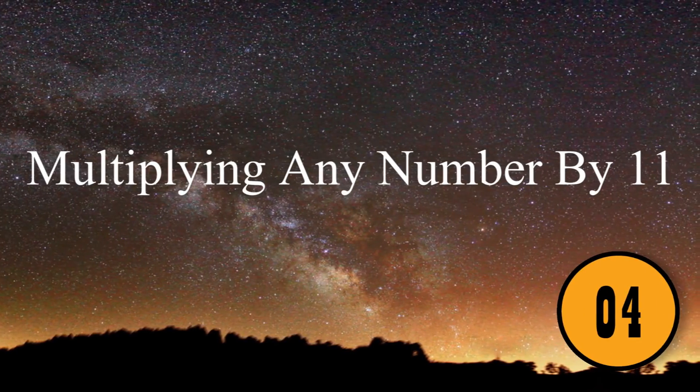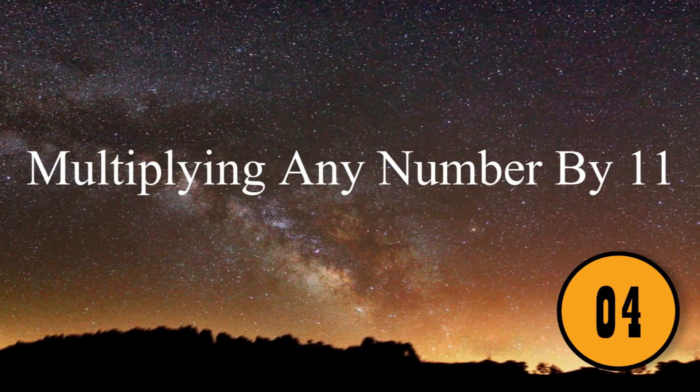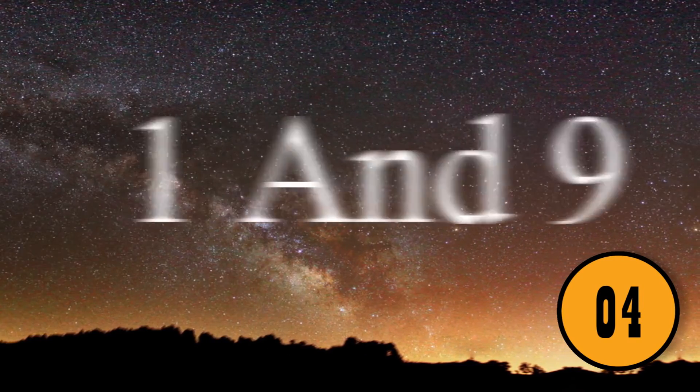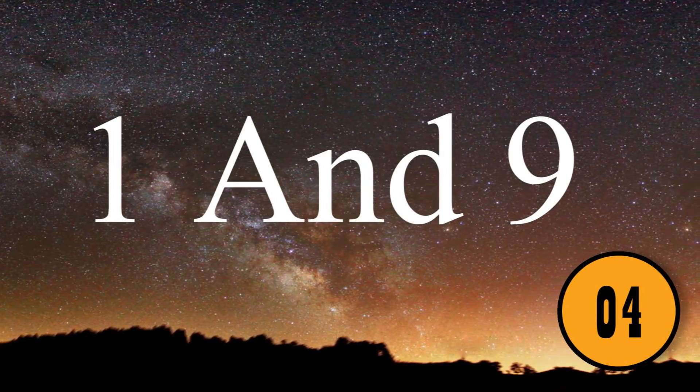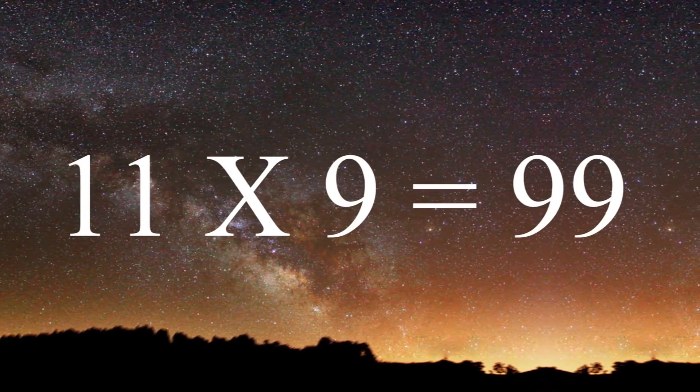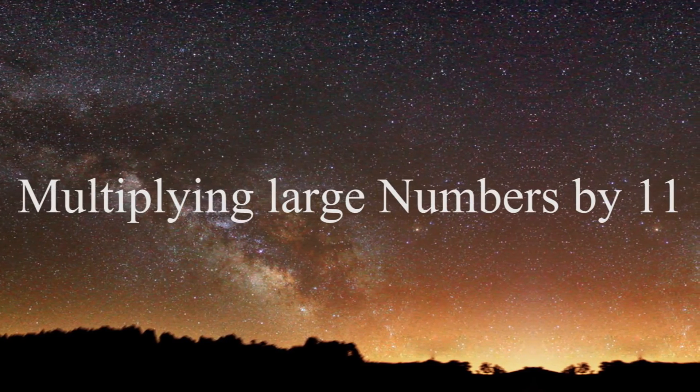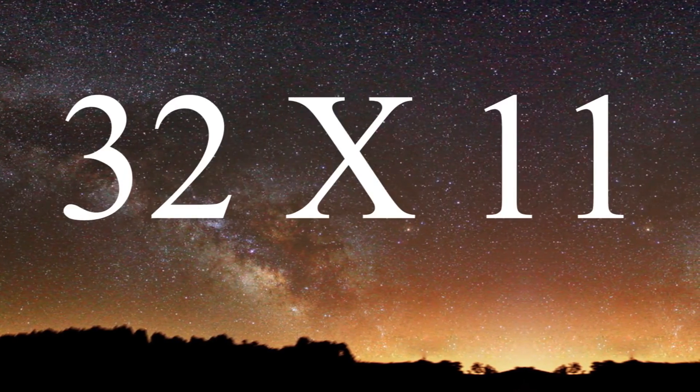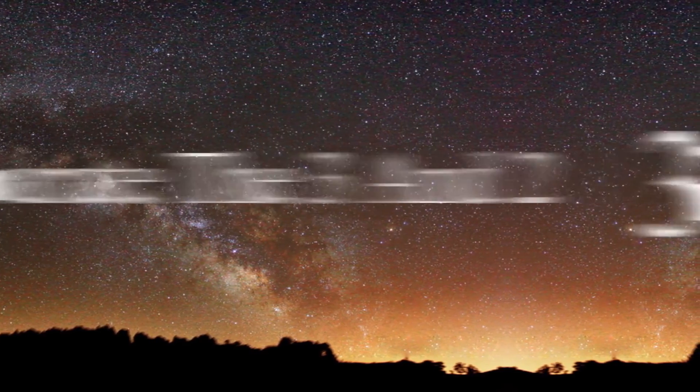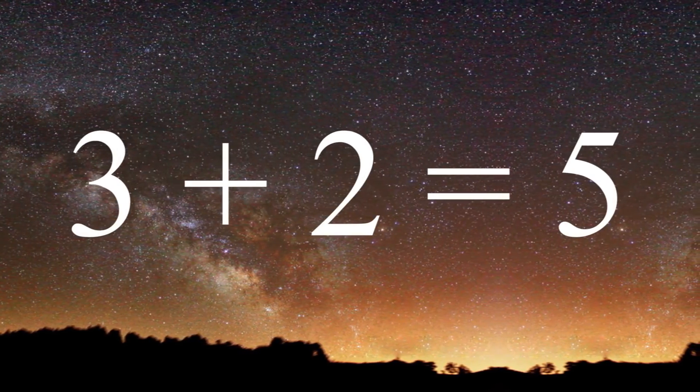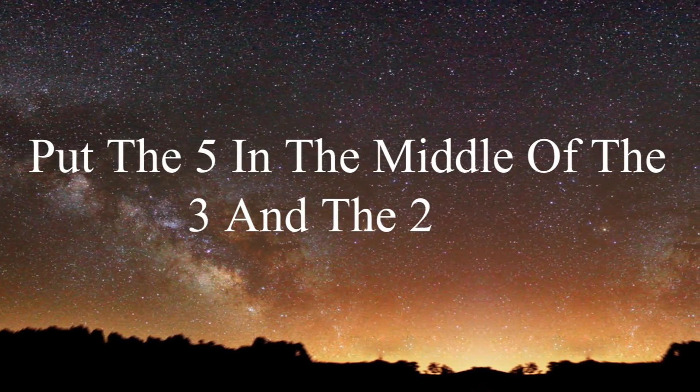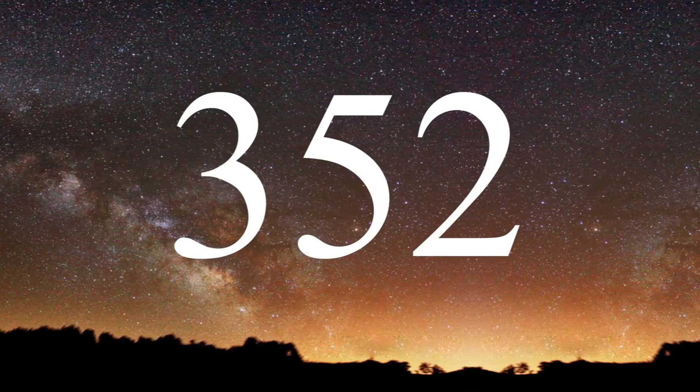Multiplying Any Number By 11. You don't need a calculator to multiply a number by 11. If the number is between 1 and 9, just add the same number to it. 11 times 9 is 99. If you're multiplying large numbers by 11, it's just as simple. If you're multiplying 32 times 11, separate the 3 and the 2. Next, add the 3 and the 2, which equals 5. Finally, put the 5 in the middle of the 3 and the 2. The answer? 352.